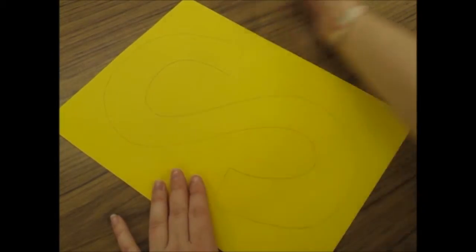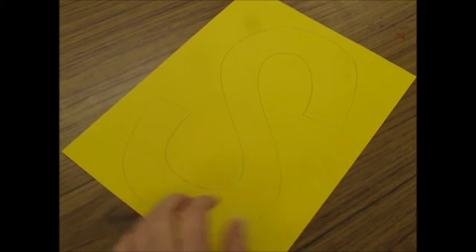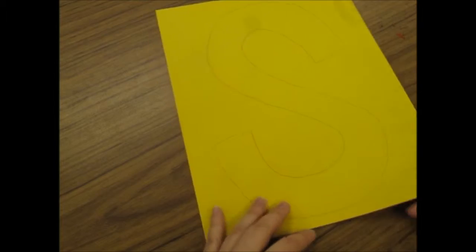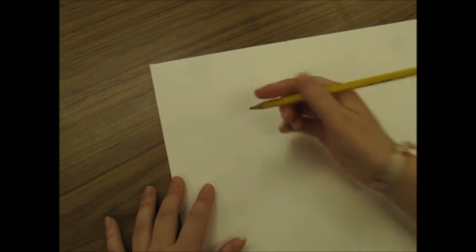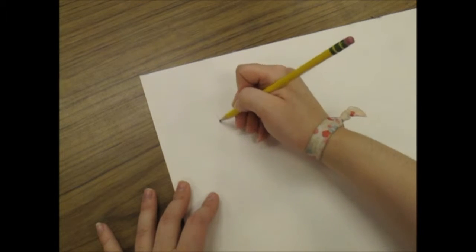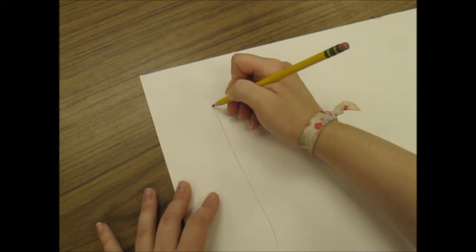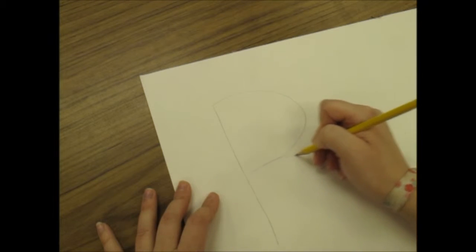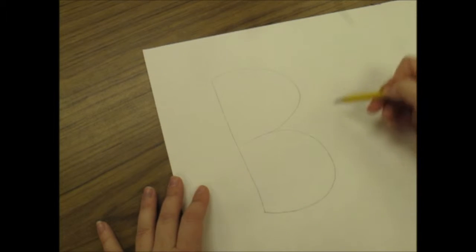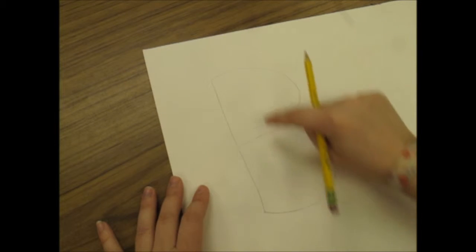Now an S shape is pretty simple to do a bubble around. Some things like R's or B's, A's, have an extra hole in them. So if you have one of those letters, remember that you're going to need to do a second hole. So let's say I have a B. Draw my B first.